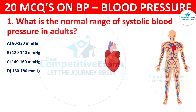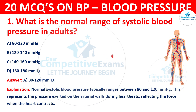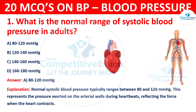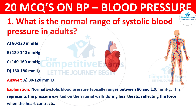The correct answer is 80 to 120 mmHg. The normal systolic blood pressure typically ranges between 80 to 120 mmHg. This represents the pressure exerted on the arterial walls during heartbeats, reflecting the force when the heart contracts.